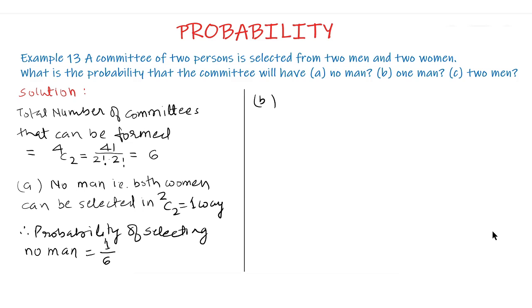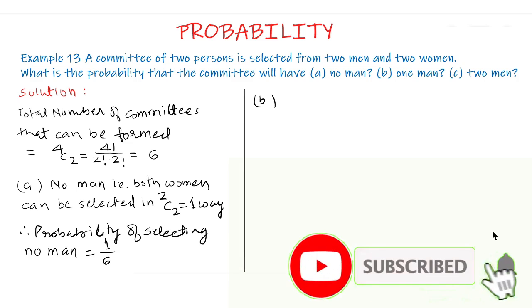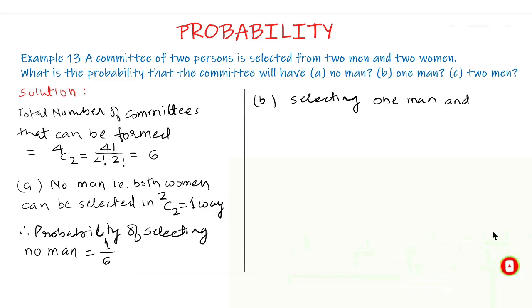Part B one man that is one man and one woman has to be selected in the committee. Selecting one man and one woman that can be done in 2C1 ways for men multiplied by 2C1 for women.